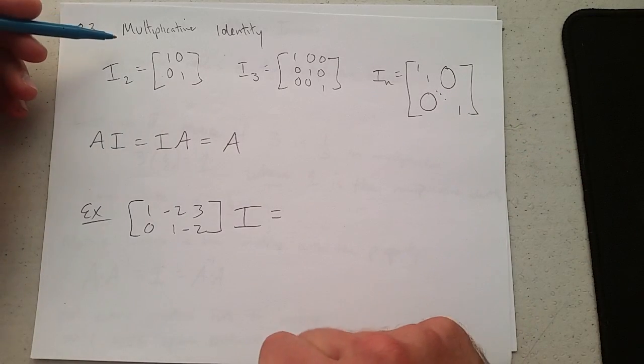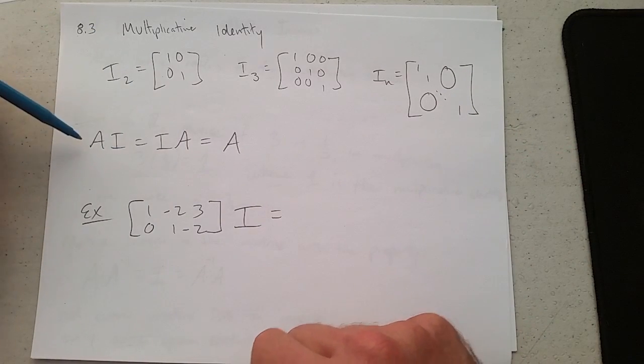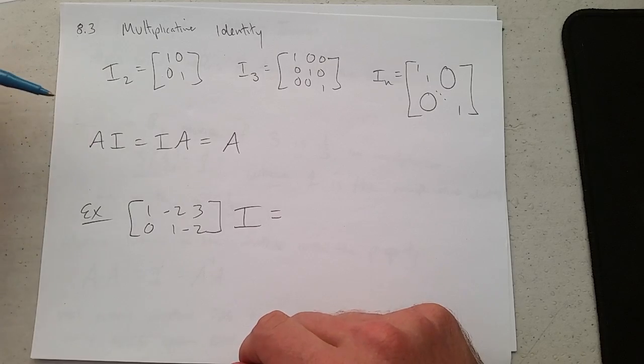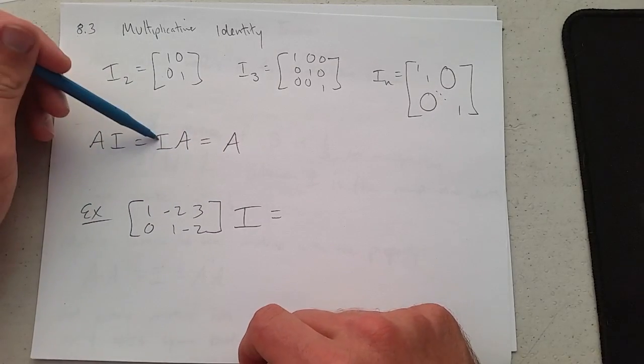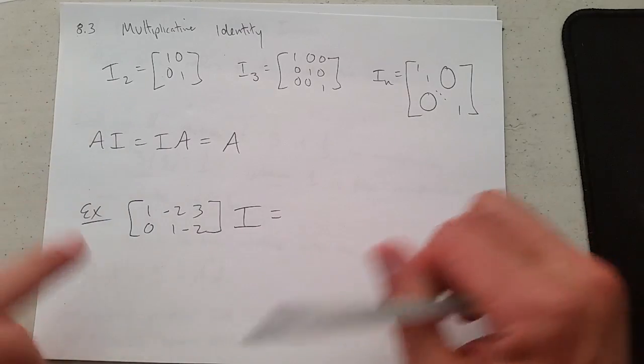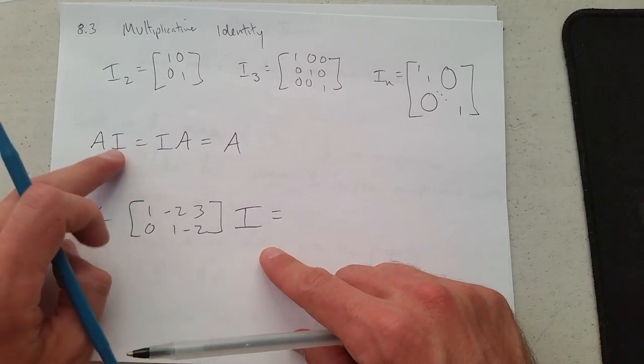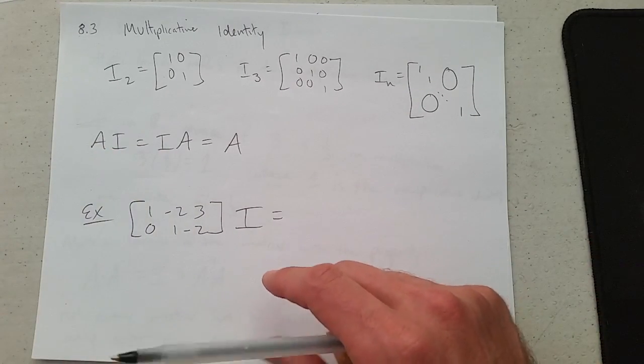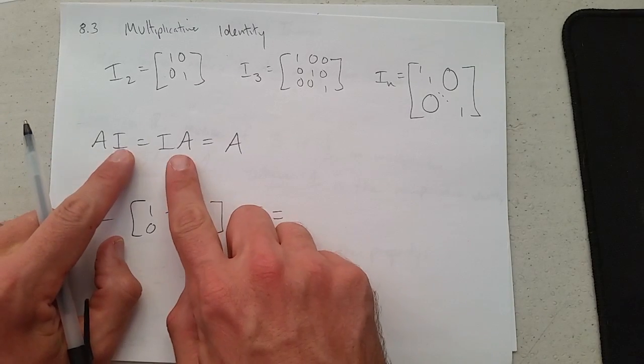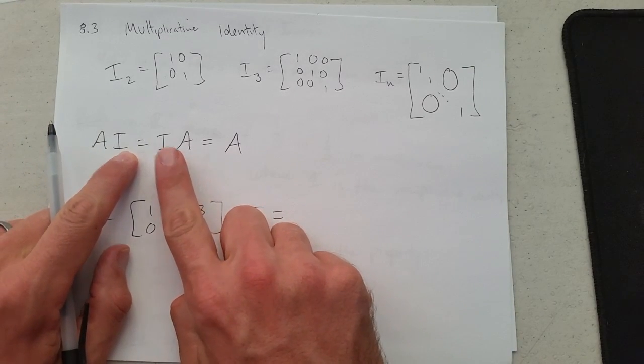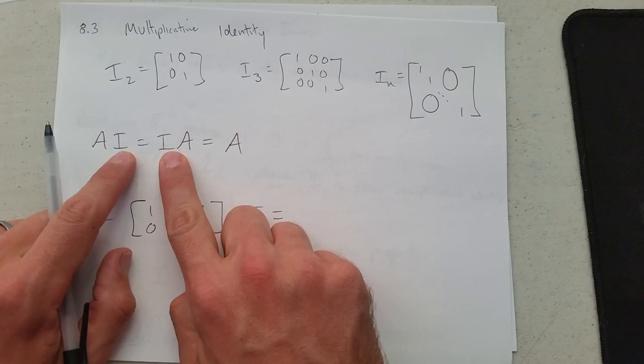So what does the identity property mean? If you multiply a matrix by the identity, it doesn't change, and if you multiply the identity by a matrix, it doesn't change. You have to pick the right identity here. It's also important to know an identity on the right may not be the identity on the left if A is not square.